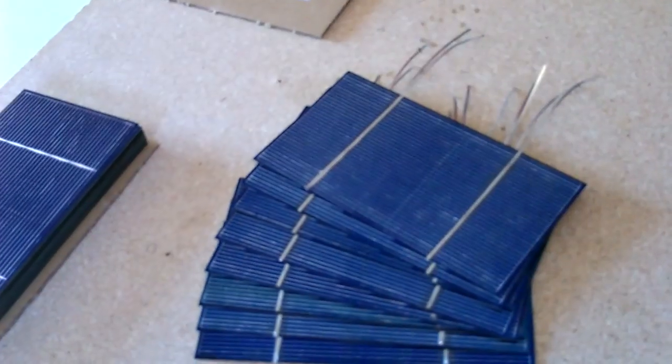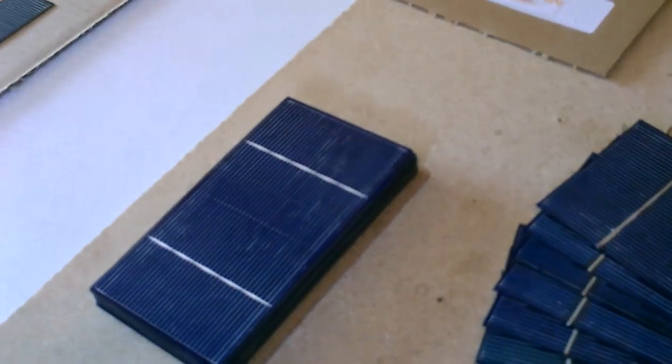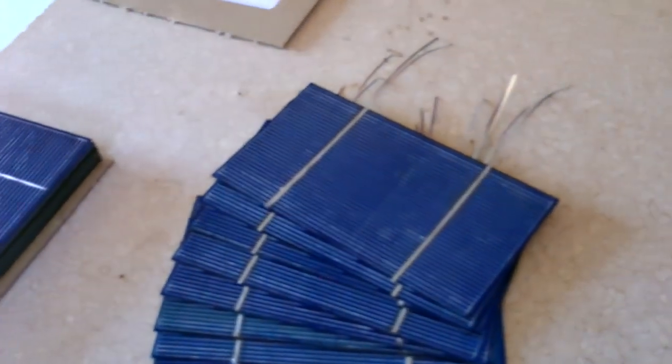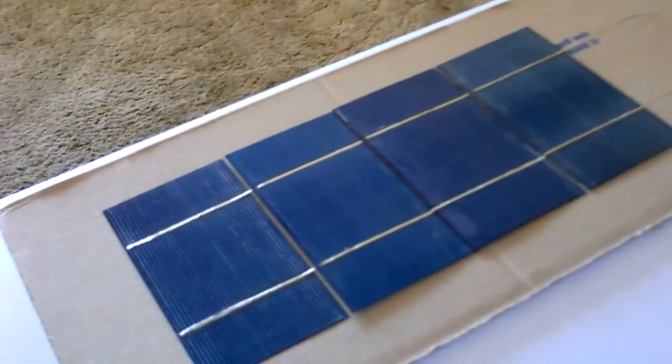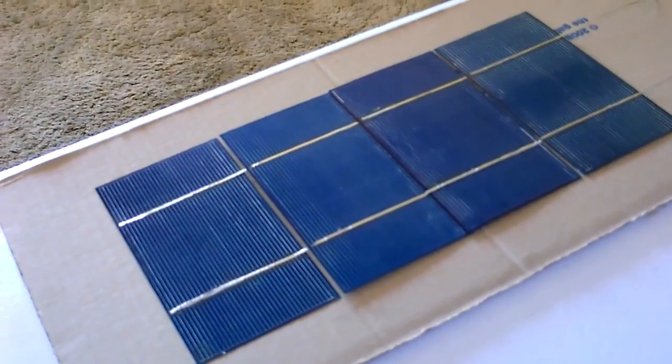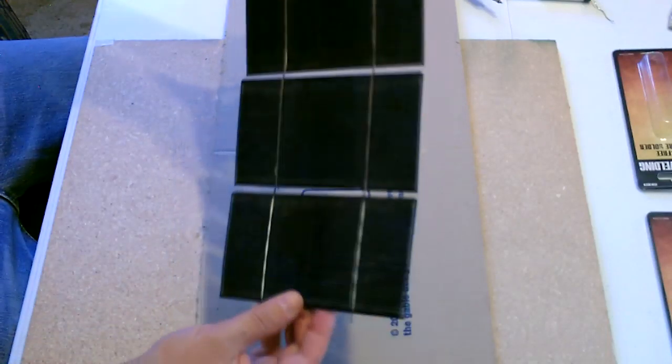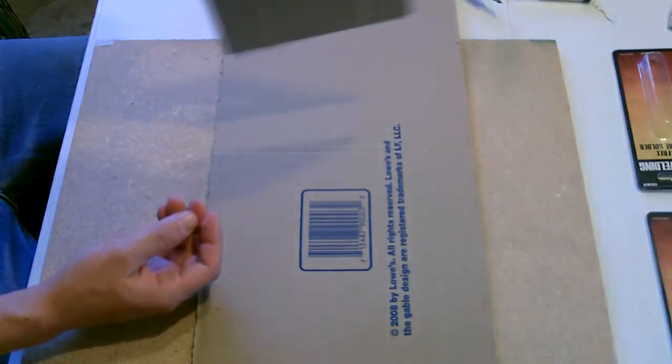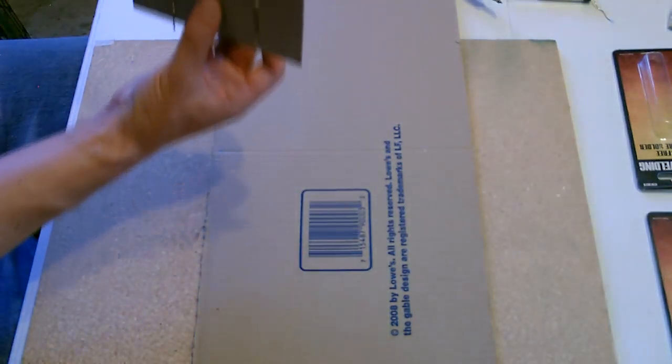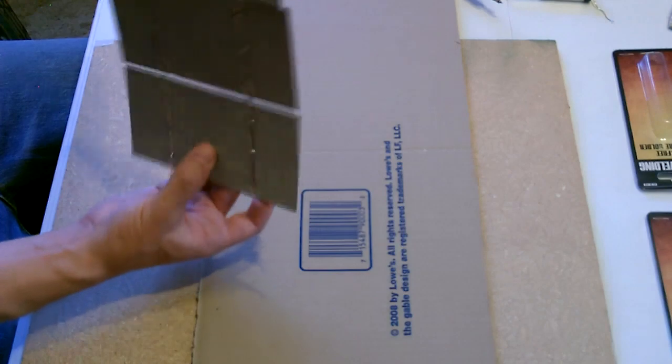So I'm going to keep working on these, but that's how you start. Untabbed solar cells, tab a bunch of them. And then the next video in this short series is going to be how to put them into long rows to make full-size solar panels. Again be super careful with these. Extremely fragile.